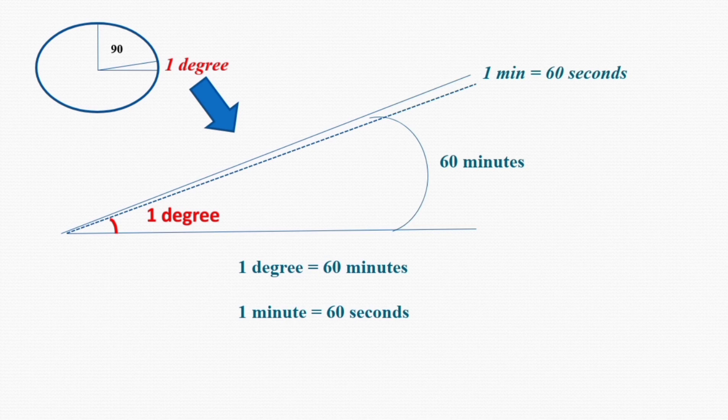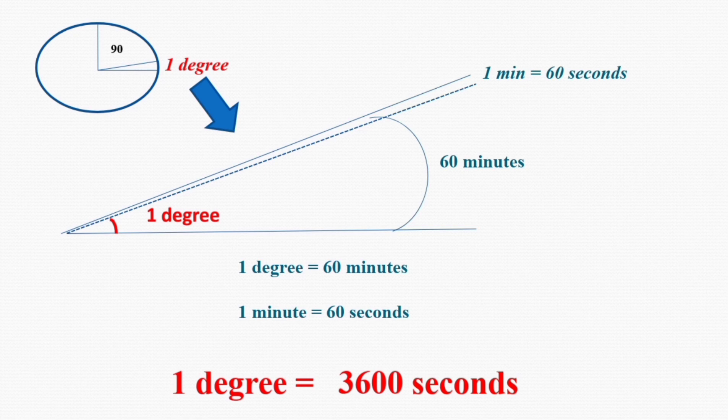So what does it mean? It means that this whole degree consists of about 3600 small portions which are seconds, or we can say that 1 degree is equal to 3600 seconds. So out of these 3600 seconds, our visual acuity is 25 seconds. So now you can imagine how accurately we can see the objects.